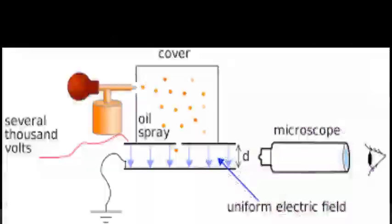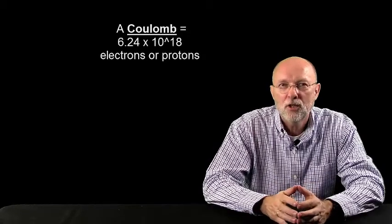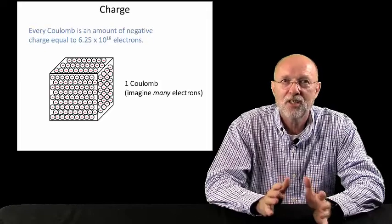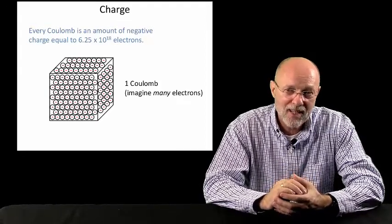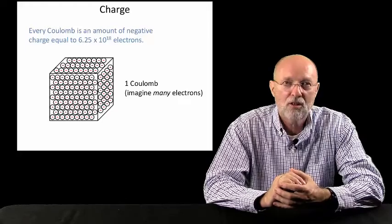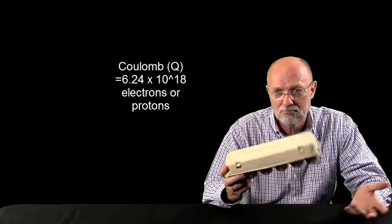In 1909, Robert Millikan and Harvey Fletcher were able to measure the charge of a single electron. So, we're going to take the inverse of that number to give us our first basic unit of electricity, called the Coulomb. The Coulomb is 6.24 times 10 to the 18th electrons or protons. Coulomb is just a way to package how much charge I have, because that number of electrons or protons will always give us the same amount of charge. So, just think of it as an egg carton. If I have 12 eggs, I have a dozen eggs. If I have 6.24 times 10 to the 18th electrons or protons, I have a Coulomb.